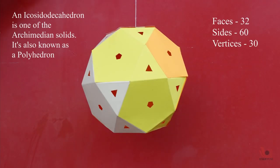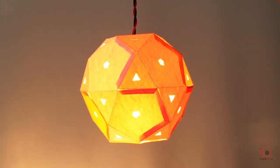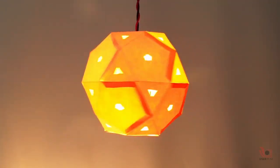This icosidodecahedron has 32 faces, 60 sides, and 30 vertices. It is a polyhedron. Install the bulb in the solid and make it a skylantern.